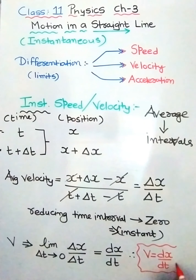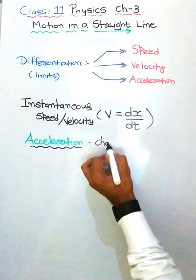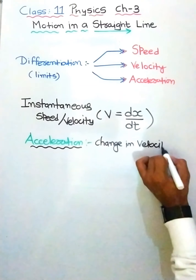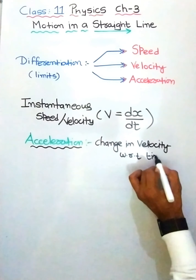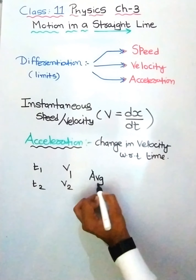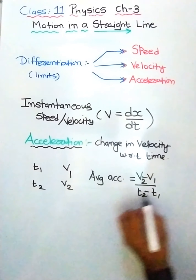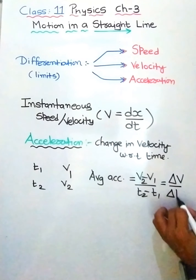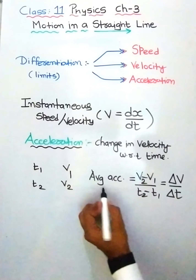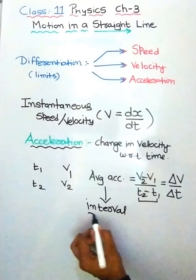So the instantaneous velocity formula is v = dx/dt. This dx/dt is also called the derivative of x with respect to t. Now let us see what instantaneous acceleration is. Acceleration is the change in velocity with respect to time. Assuming that at time t₁ the velocity was v₁ and at time t₂ the velocity was v₂, the average acceleration is v₂ minus v₁ upon t₂ minus t₁, which is delta v by delta t.